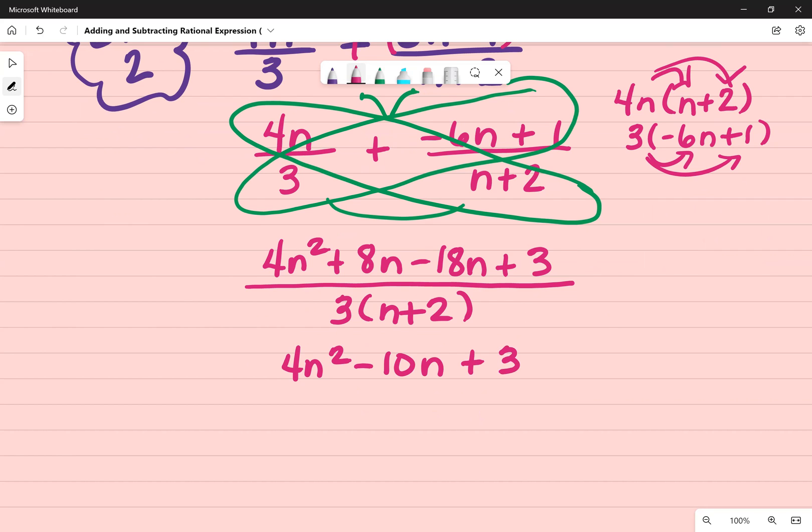And looking at that, I know I can't factor that because 4 times 3 is going to give me 12. And there's not two numbers that will multiply to give me 12 and add to give me that middle number negative 10. So I can't factor that any further.